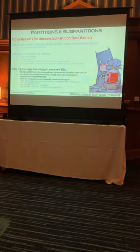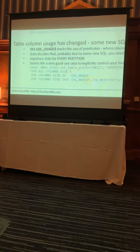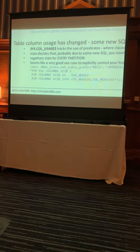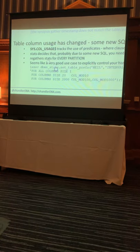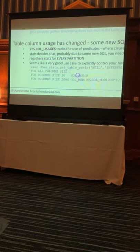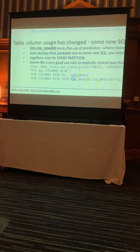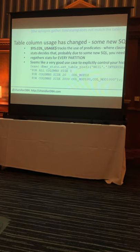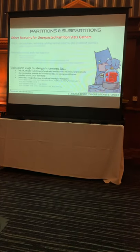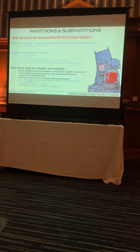Or you may find that table column usage has changed - someone put new SQL into your system that uses a predicate not used previously. SYS.COL_USAGE$ records the use of all your predicates and where clauses. Oracle may decide it needs to build a new histogram for your new predicate, and if it's got to build a new histogram it's got to scan through every partition. This is a particularly good reason when you've got large incremental stats gathering to lock your histograms. Do not allow a method_opt of 'FOR ALL COLUMNS SIZE AUTO' because you may suddenly get a new histogram from new SQL and overnight you get a very large unexpected stats gather. A good use case for being very specific: 'FOR ALL COLUMNS SIZE 1' - no histograms except SIZE 254 on this column and SIZE 2001 on these columns. Very specific histogram control.